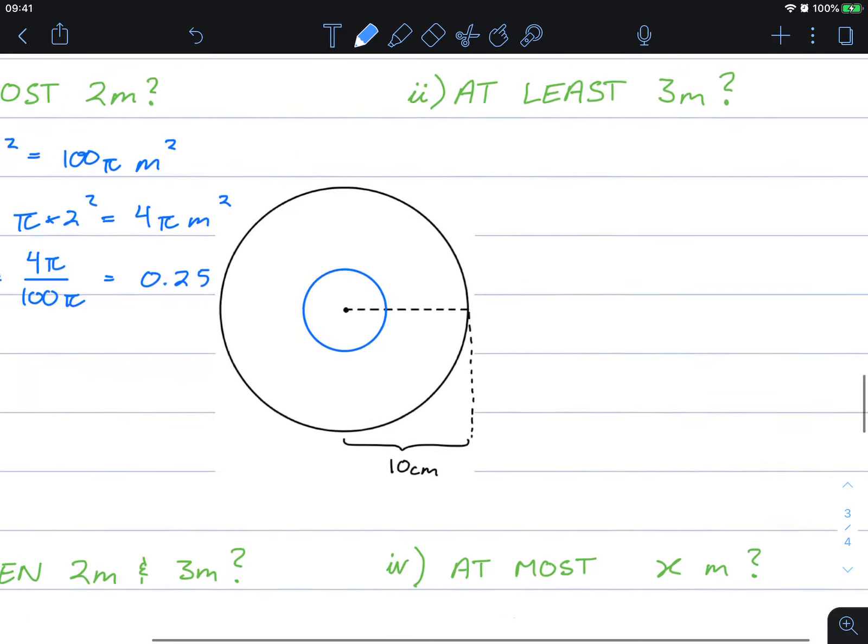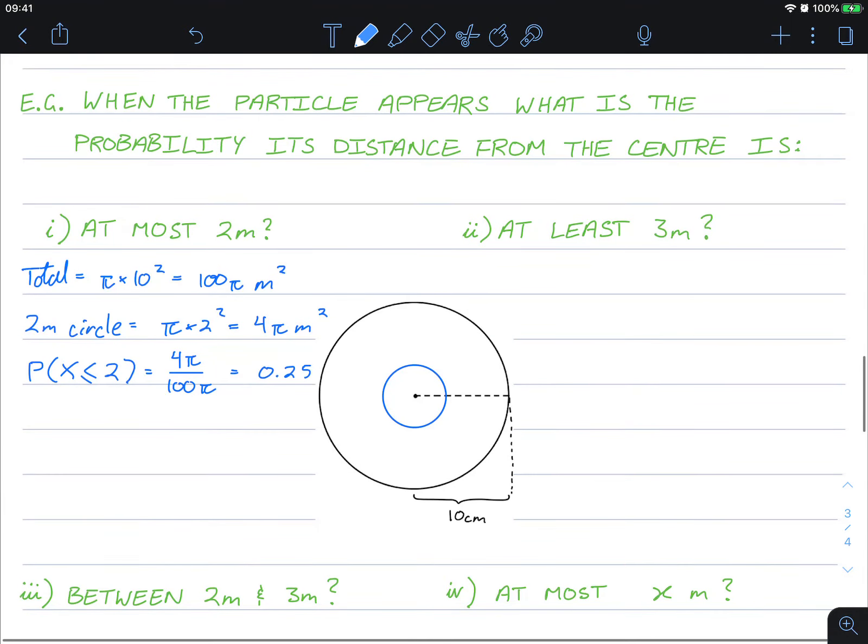At least three meters, that's the same as the probability of x is greater than or equal to three meters. Well, that's going to be π times 3 squared, equals 9π. Probability of this is going to be 9π over 100π.